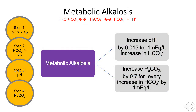If the pH is elevated and the bicarbonate is elevated, a metabolic alkalosis is likely. Alkalosis results from loss of hydrogen ions or excess bicarbonate. Common causes of metabolic alkalosis include prolonged vomiting, hypovolemia, diuretic use, or the administration of bicarbonate. Hypokalemia, or low levels of potassium, can both cause and maintain metabolic alkalosis by shifting hydrogen ions into cells and by augmenting renal excretion of hydrogen ions.